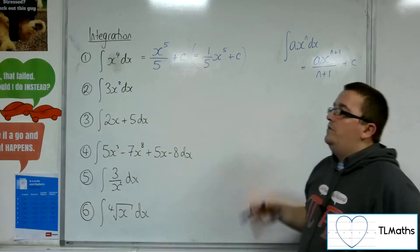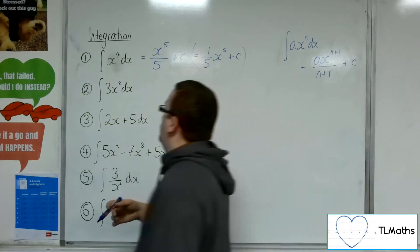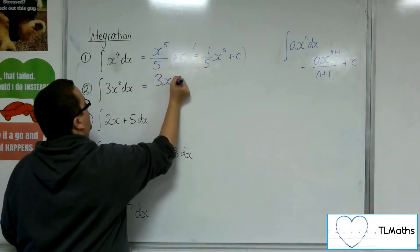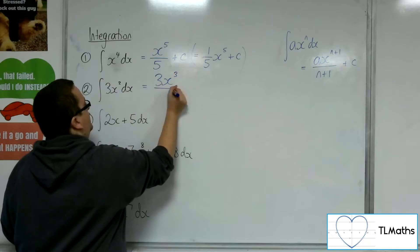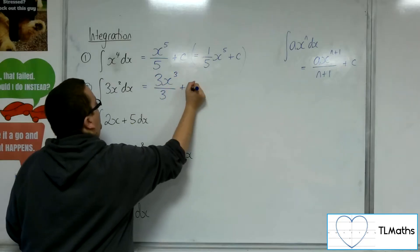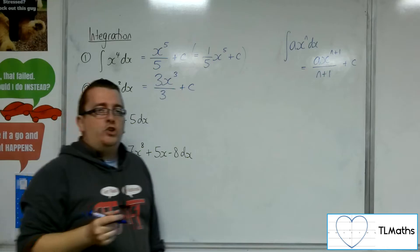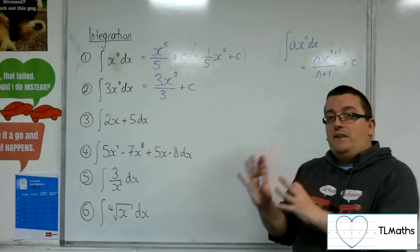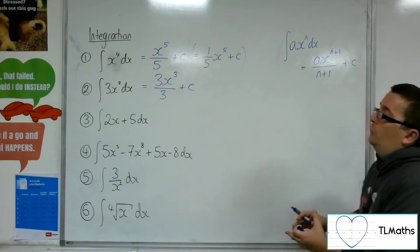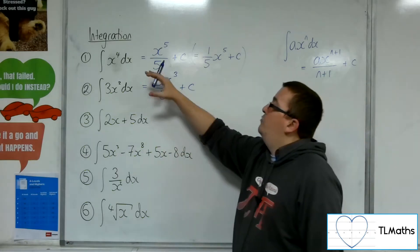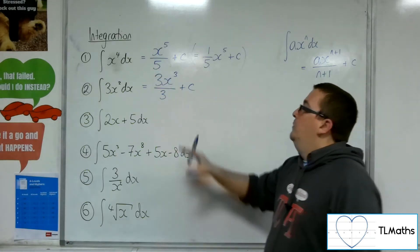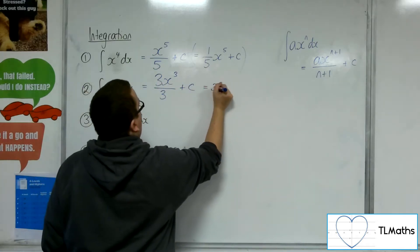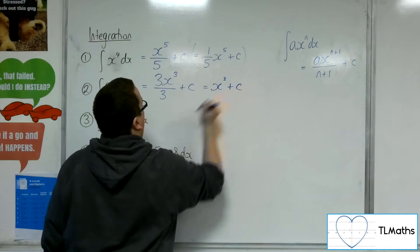Let's go on with number 2. So the integral of 3x squared dx. We are going to add 1 to the power of the x, divide by the new power, and then add on that constant of integration. Now in this example, it wouldn't be appropriate to just leave your answer like that, because we have a common factor in the numerator and the denominator. So the 3s can cancel, and you'd be left with x cubed plus c.